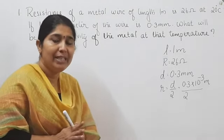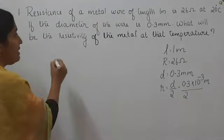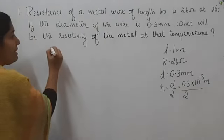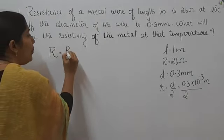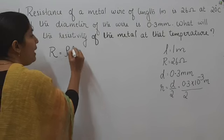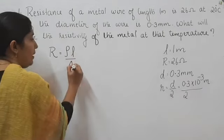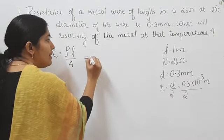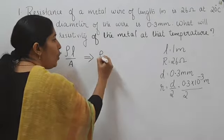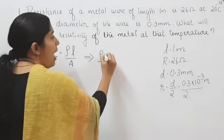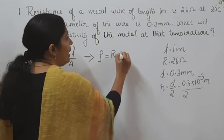For this, we know the equation for resistance: R is equal to rho into L divided by A. From this, resistivity rho equals R times A divided by L.